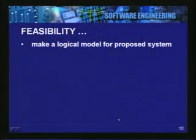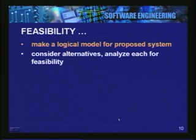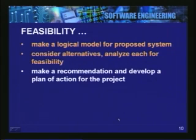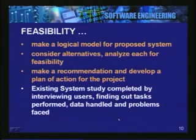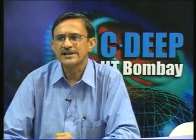Some kind of proposed system is an objective of the feasibility and a few alternatives would be given. For each alternative we will analyze all types of feasibilities such as technical feasibility and economic feasibility. Finally the phase will end by making a clear recommendation. While doing the study of the existing system we will naturally be talking to the various users of the system - the assistant librarian, the counter clerks, and also the students and staff who borrow books from the library - to find out what tasks are performed in the circulation function.